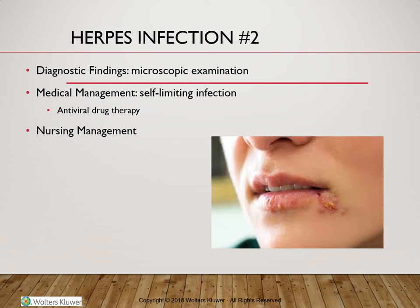The diagnosis is mainly done by client history and by observing the lesions. We can perform smears or culture the lesions and examine them under the microscope using specific stains. Because this involves a virus, we can do a PCR (polymerase chain reaction) test to identify the DNA and confirm that the lesion is caused by herpes virus and not another pathogen.